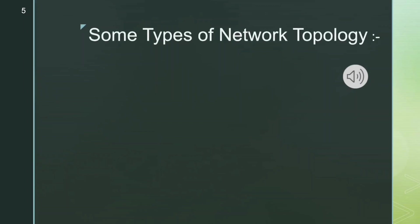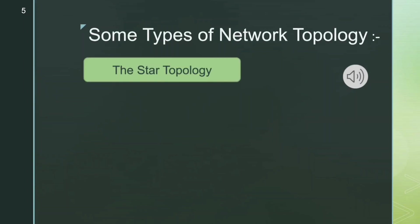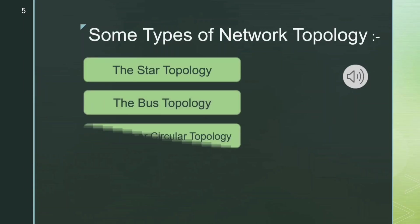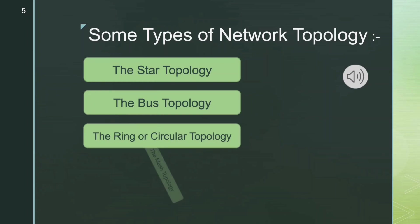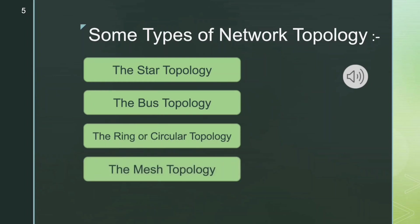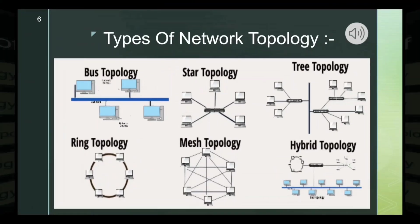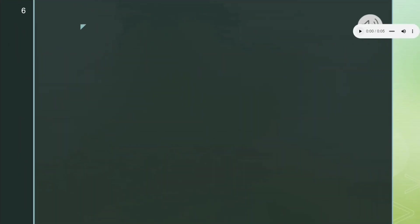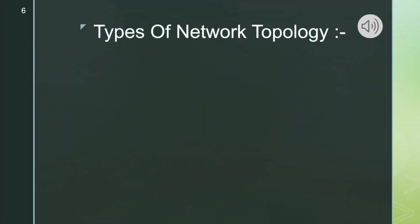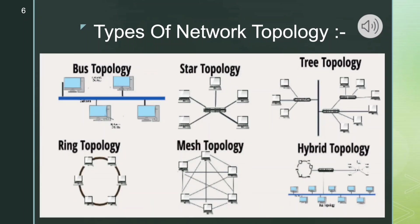Here are some types of network topology: the star topology, the bus topology, the ring or circular topology, the mesh topology, and the tree topology. Here we see the pictorial representation of some of these network topologies.